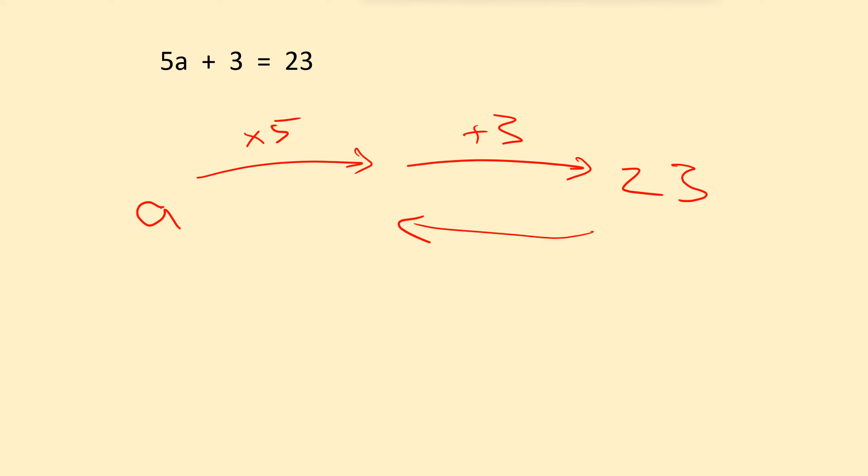Well, what's the inverse, the opposite of plus 3? That would be minus 3. So, so far we have 23 minus 3. That would put us at 20.